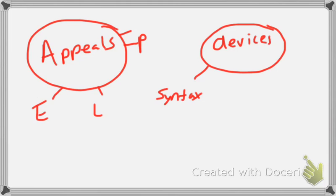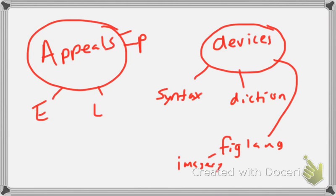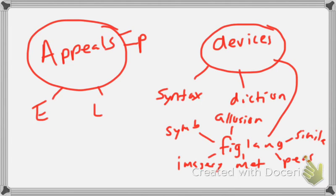And then you've got the devices, which a lot of people have said they're having a hard time acknowledging. So I like to simplify it into these here: syntax, diction, figurative language, and figurative language includes imagery, metaphor, personification, simile, symbolism, and to an extent, allusion. Now you also have tone. What happens when you're doing an analysis is it's not like a plug and play where you can just say he uses this type of syntax and this type of diction and this type of appeal in order to achieve this purpose.